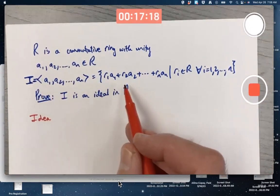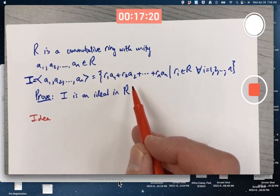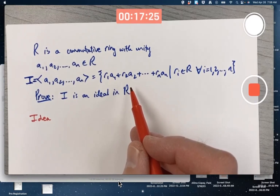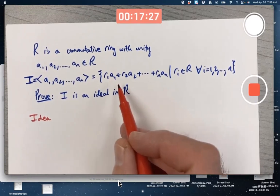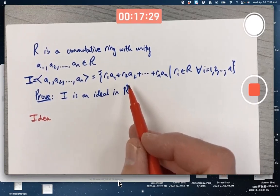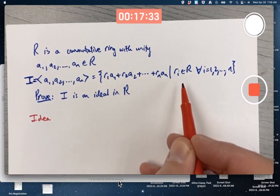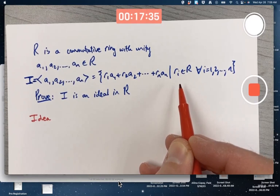I is defined to be this set, which, analogous to linear algebra, you could think of as a set of linear combinations, though the coefficients of the A's are not scalars from the real numbers, for example, but they are from the ring itself. So it's a similar concept to linear combinations, but not the exact same thing.